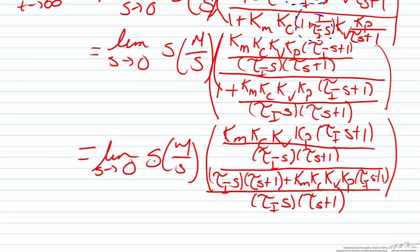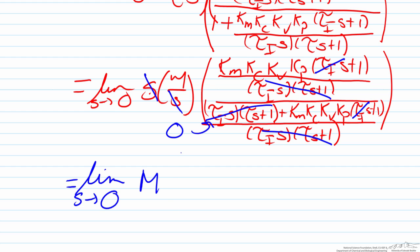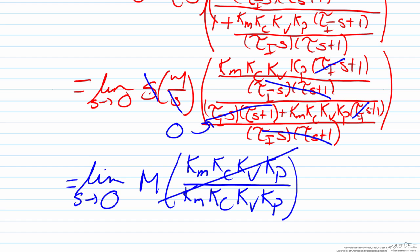So what we will now do is begin some cancellations. What we will notice here is that our s's cancel out on the front. The denominators of both the numerator and denominator cancel out. What we also see is that the first term of the denominator goes to zero because of the fact that tau_i s will equal zero as s goes to zero. And similarly the tau_i s terms will go away for the same reason. So what this leaves us with after some algebra is M times Km Kc Kv Kp over Km Kc Kv Kp, which in fact explicitly cancel, so therefore our limit here is M.